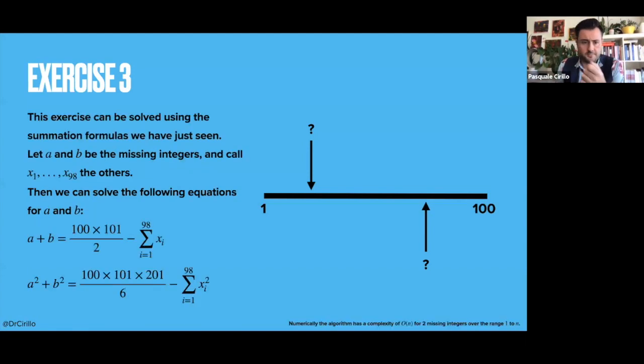How can you do that? Now if we call a and b the two missing integers, I know that I have a and b, and then the 98 integers for which I can, for example, consider the sum and whatever.